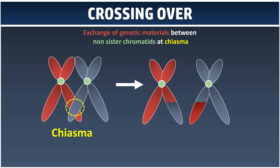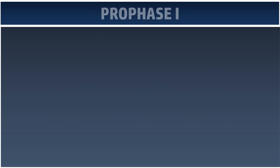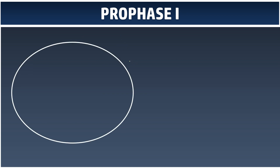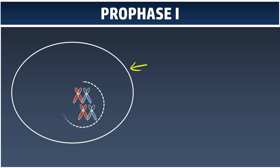As we mentioned before, meiosis undergoes cell division two times, so this is why it begins with Prophase I. We use an animal cell to illustrate meiosis. This is the plasma membrane, and we have four chromosomes inside the nuclear membrane or nuclear envelope. If you have watched the previous video, we learned about centrioles and chromosomes.